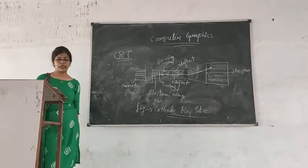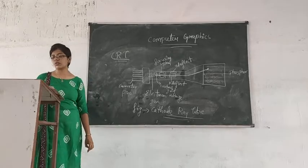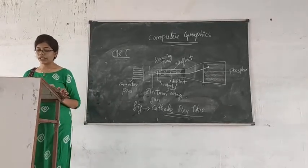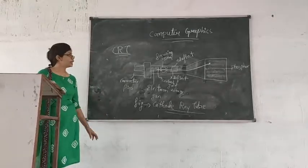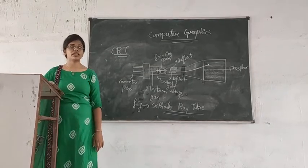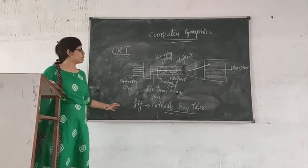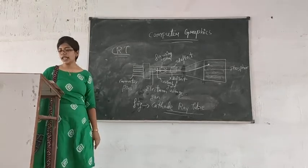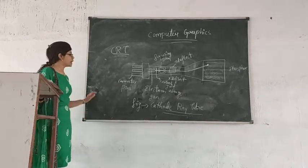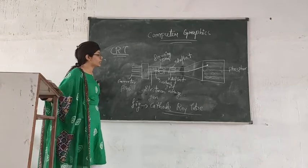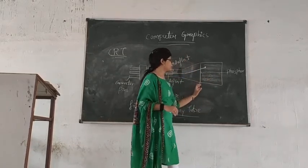Now we have the Cathode Ray Tube, or CRT. The CRT is the simplest version, which consists of a glass-sealed tube with two metal plates — one with a negative charge and the other with a positive charge. This was used in old televisions and old monitors. There are two plates: a positive charge and a negative charge, and an electron gun which fires at the screen.